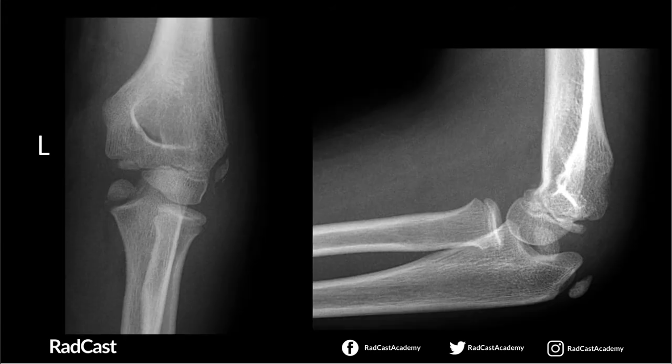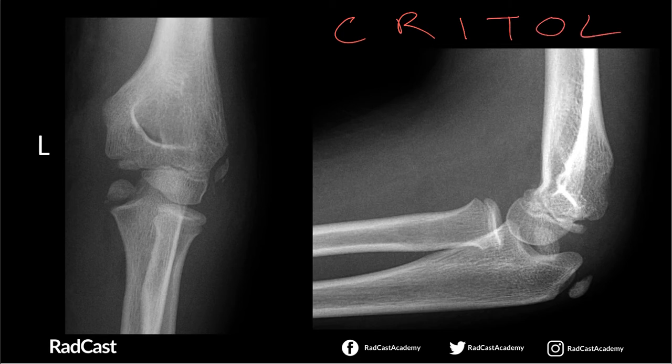Here are Wally's left elbow X-rays. On the left side of your screen you've got the frontal view; on the right side, the lateral view. Remember, Wally is 13 years old, so as per CRITOL, he should have all of his ossification centres. But remember, it's not so much about the age — it's the specific order in which the ossification centres appear. One cannot appear without the prior one already forming. Let's put that into action.